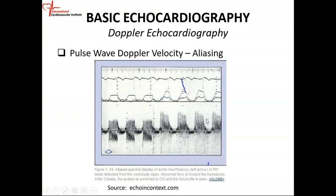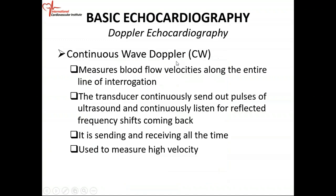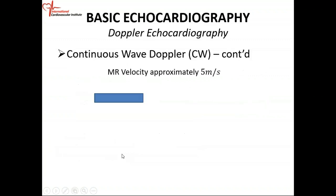You have to switch to what we call continuous wave Doppler. Continuous wave Doppler measures blood flow velocity along the entire line of interrogation. The transducer is constantly sending out impulse and constantly listening or receiving. Whereas with pulse wave Doppler, it sends out an impulse and then waits for the return signal — continuous wave does not do that. It's continuously sending out impulse and continuously receiving reflected frequencies. Because of this, you can measure high velocities — it's sending and receiving at all times.